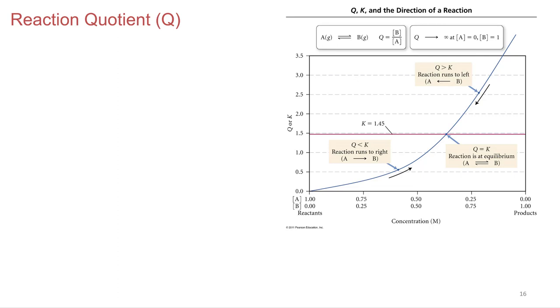It turns out it's so useful that we want to use it even if the system's not at equilibrium. So we still want to calculate that for systems that aren't at equilibrium. If we do that, though, we can't call it the equilibrium constant, right? Because it's not at equilibrium.